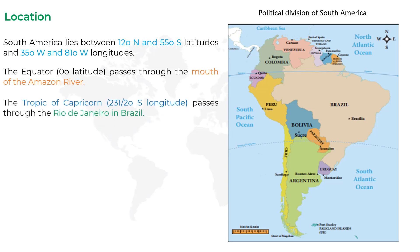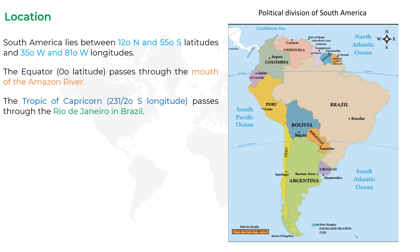The next point is: the Tropic of Capricorn, at 23 and a half degrees south latitude, passes through Rio de Janeiro in Brazil. The Tropic of Capricorn is the parallel of latitude south of the equator, and this line passes through Rio de Janeiro in Brazil.